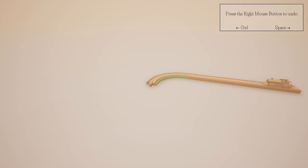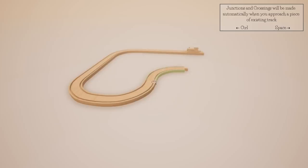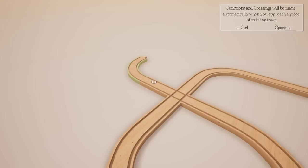Junctions and crossings will be made automatically when you approach a piece of existing track. So if I wanted to go around and make a little curvy section — oh, we got a little junction! Look at that, that's fancy!